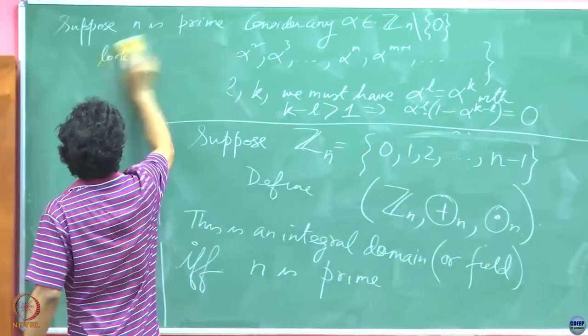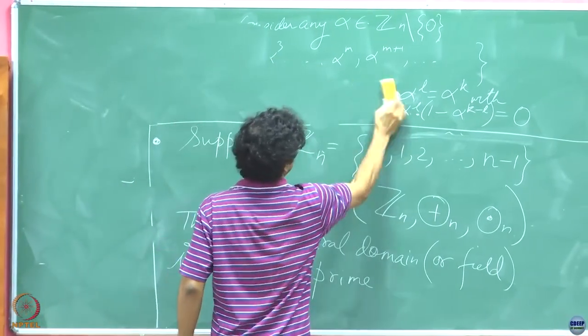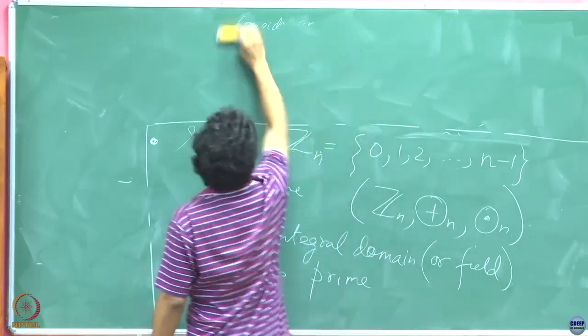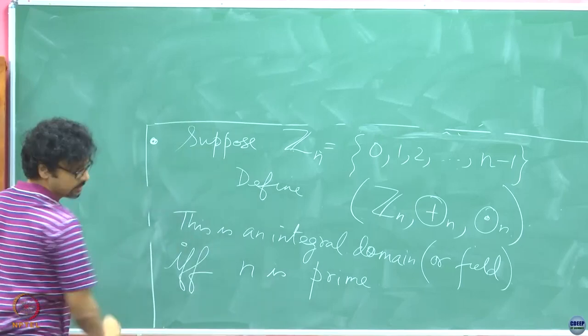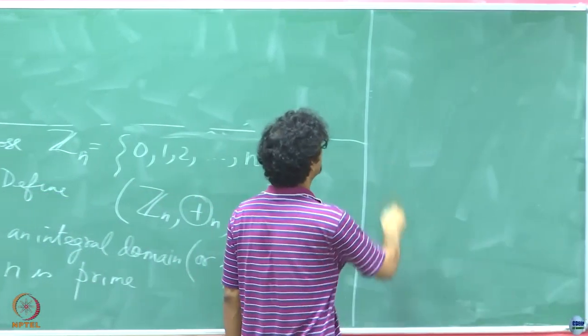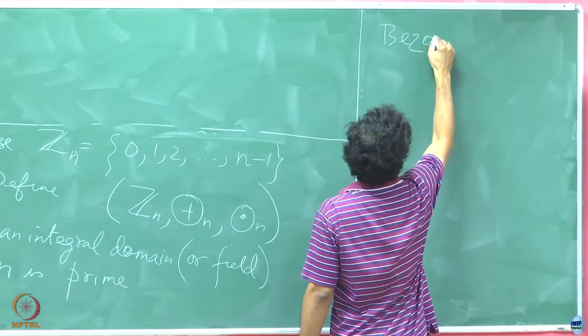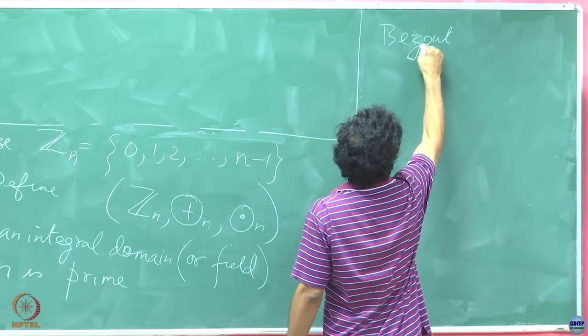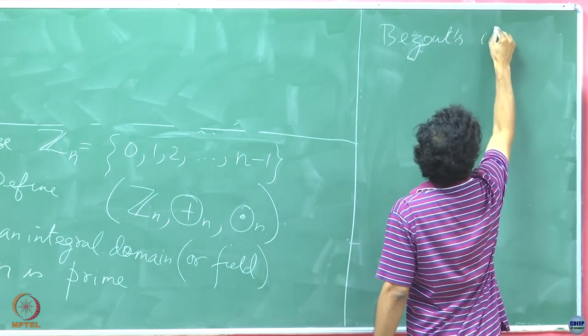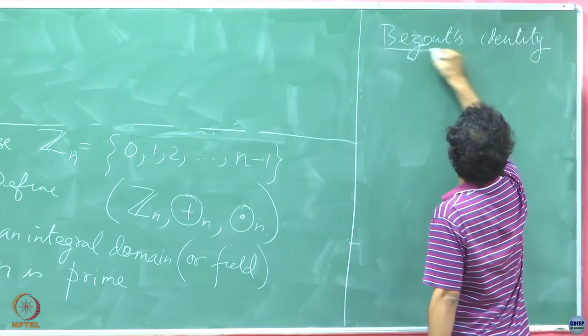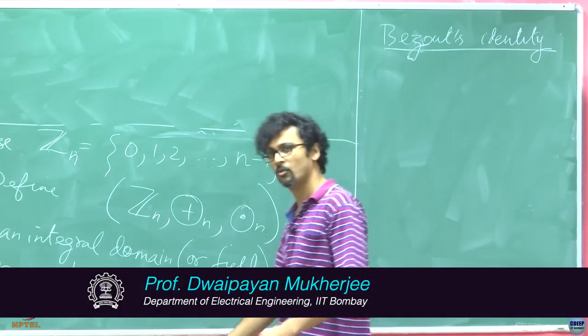So, if you permit me to take a seeming digression for a bit, then we shall look at something called Bezou's identity. Also known as the Aryabhatta-Bezou identity. What does it say?